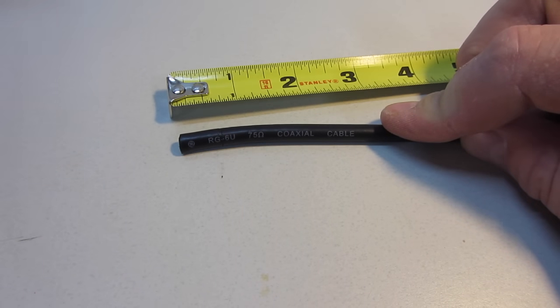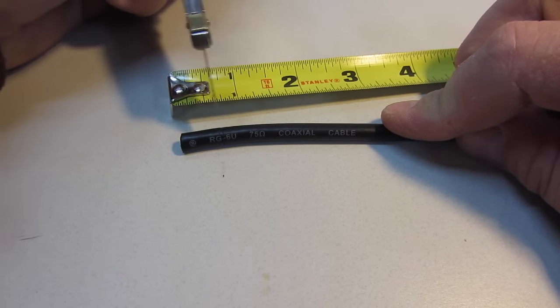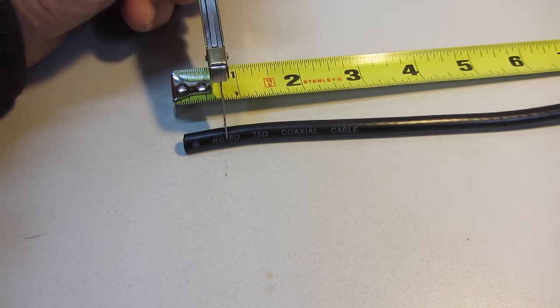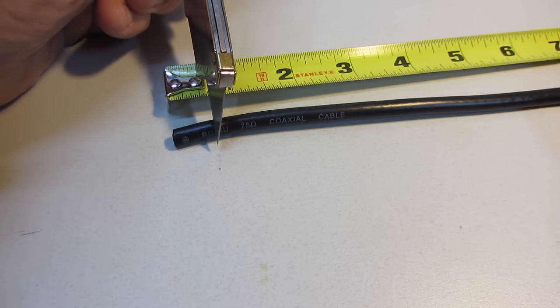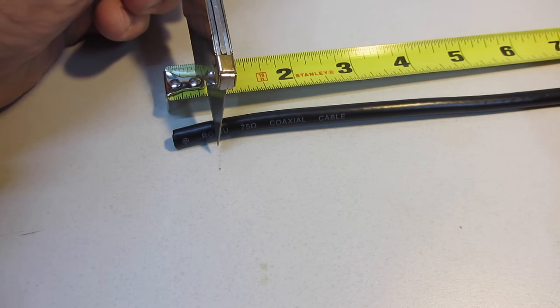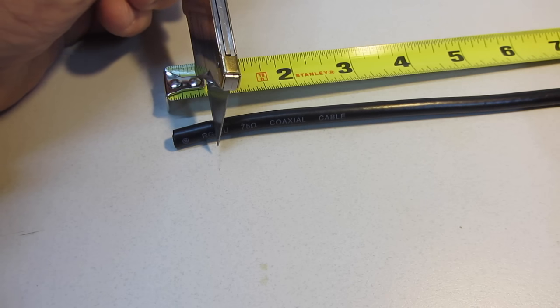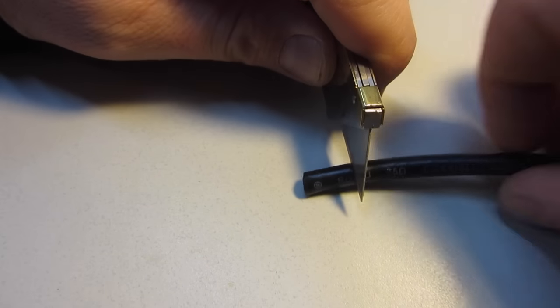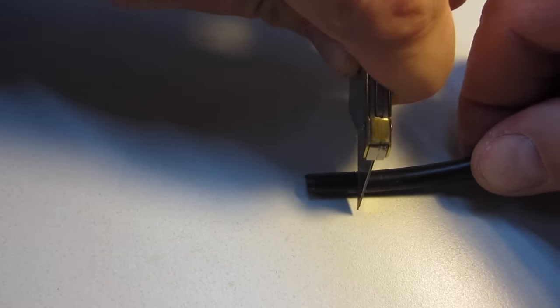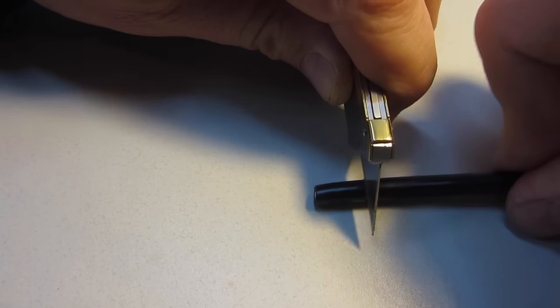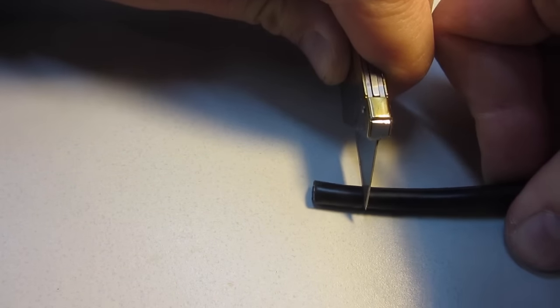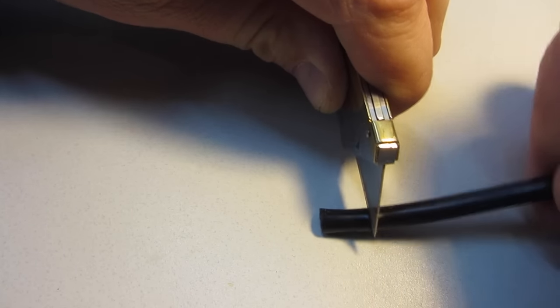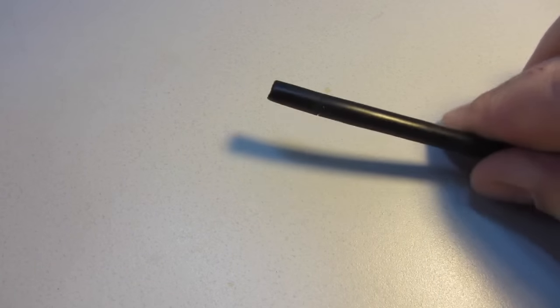To prep the end of the cable, you will first cut off about a half inch of the black sheathing. Be careful not to cut too deep. You do not want to slice through the braided shield underneath. It is a braid of very fine wires.